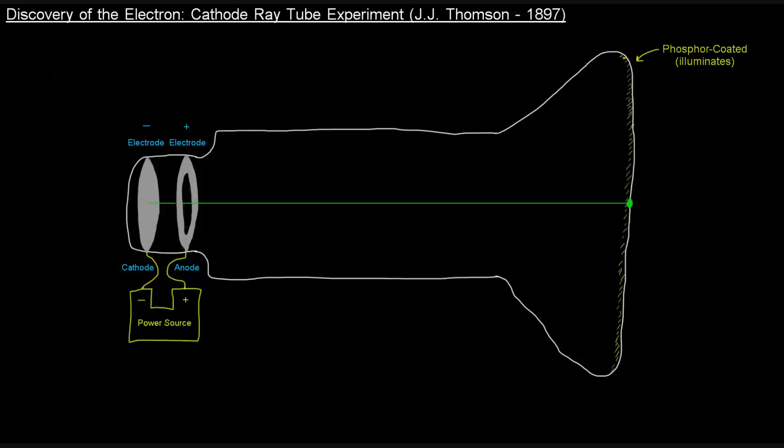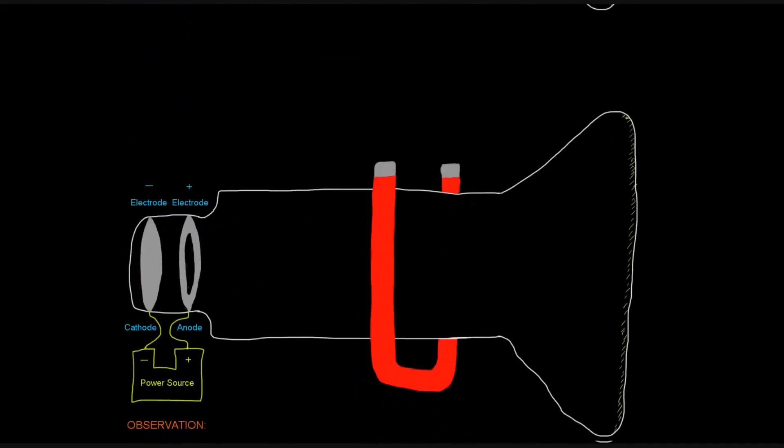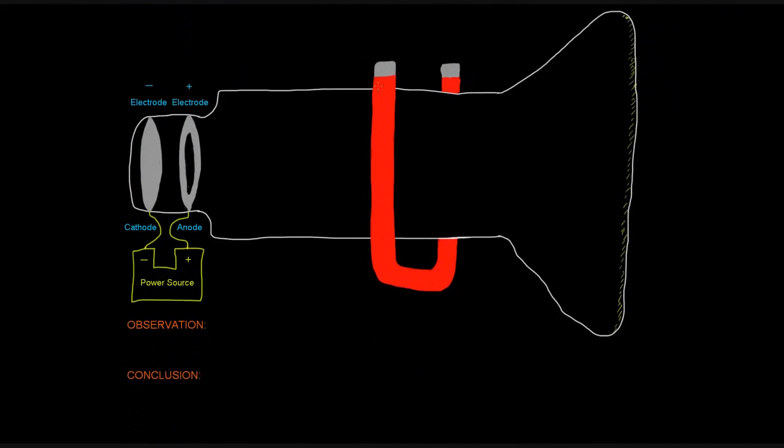So what he does, pretty genius, he grabs a magnet and he holds it kind of around the tube. And he tries to see what's going on with the ray, if this affects it. And so what he notices is that the beam bends, the ray bends in this magnetic field. That's the observation that he makes.